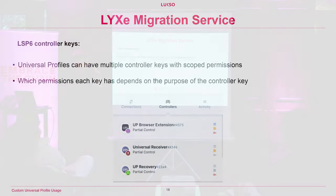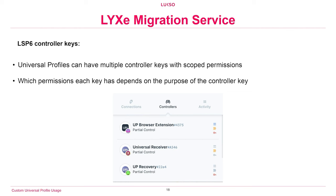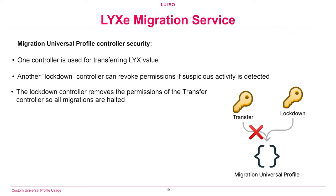Why did we use a Universal Profile instead of just a private key? Mainly safety. Storing funds on a Universal Profile gives us much more safety benefits. As you saw this morning, Universal Profiles can have multiple controller keys which can control different aspects of the profile. In this case, the migration Universal Profile had two keys: a transfer key and a lockdown key.